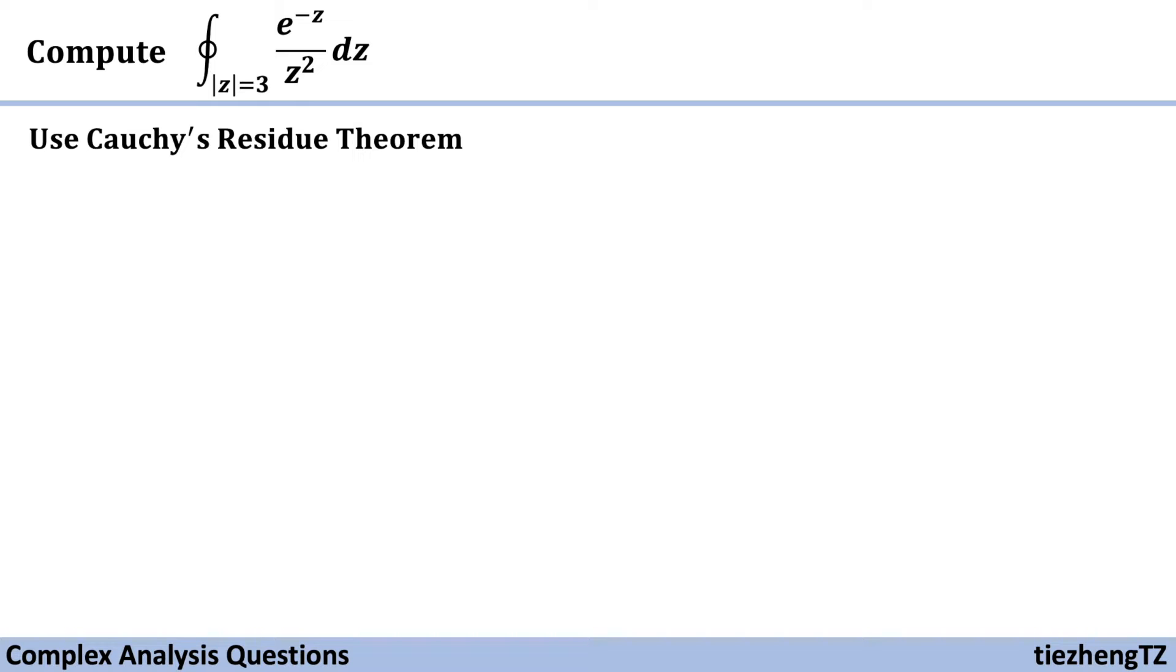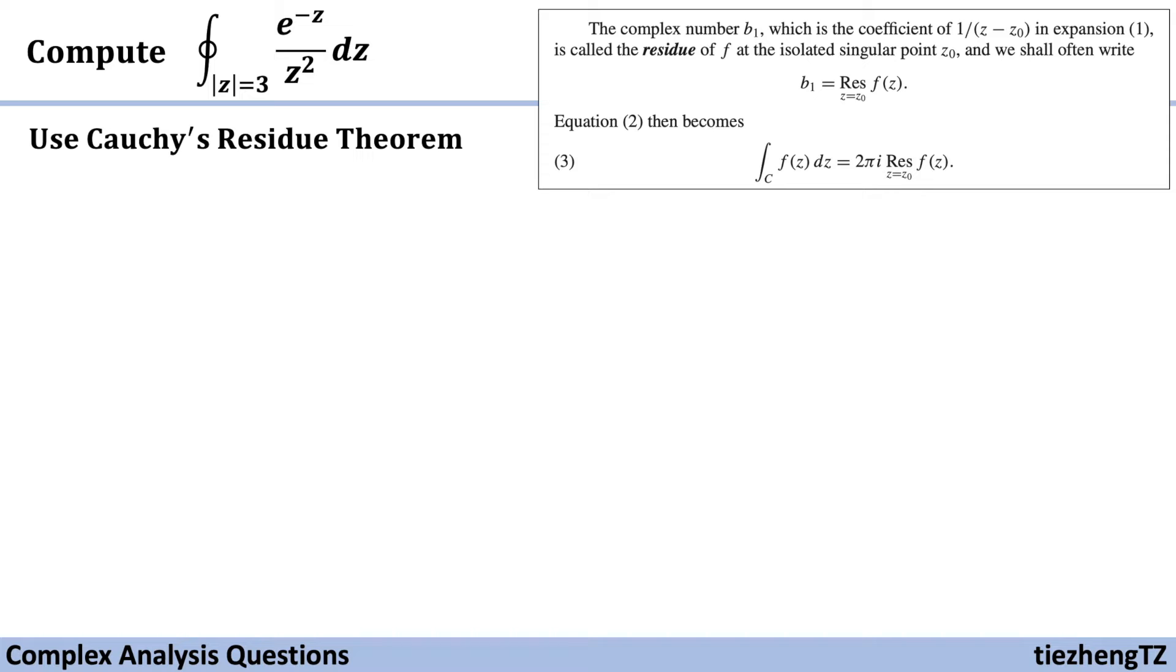First, let's recall Cauchy's Residue Theorem. The complex number b₁, which is the coefficient of 1/(z-z₀) in the expansion form, is called the residue of the function f at the isolated singular point z₀.